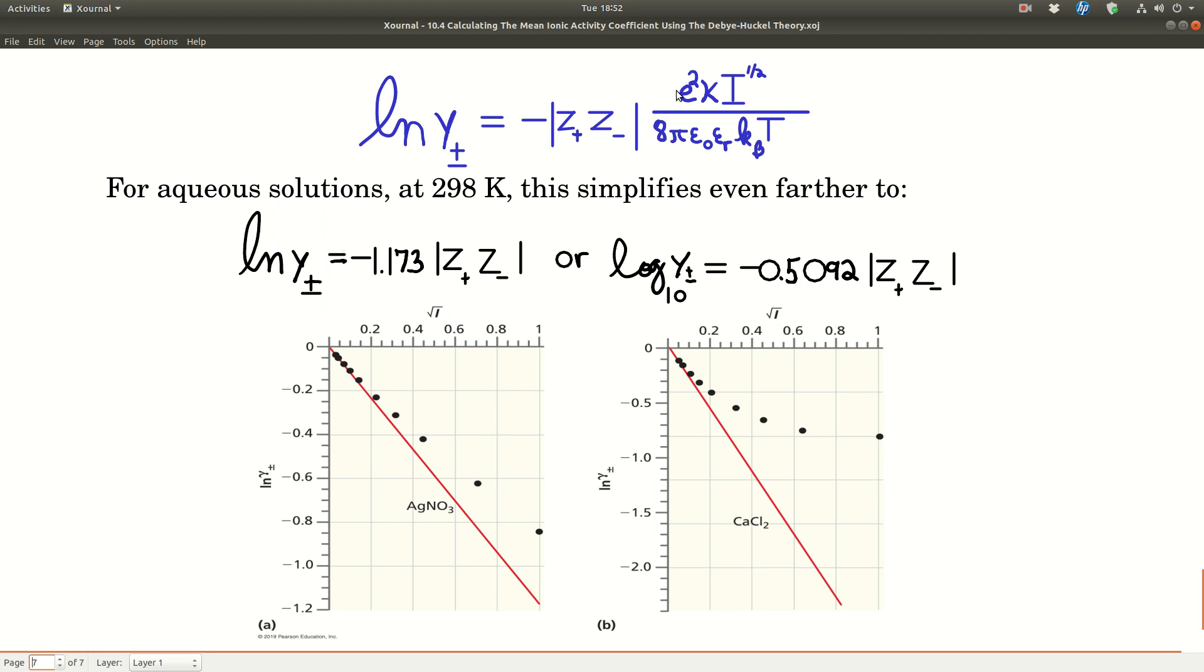The natural log of the mean ionic activity coefficient is equal to minus the absolute value of the product of the charges times e squared kappa times the square root of ionic strength over 8π epsilon naught epsilon r kB T. A lot of constants in there. For an aqueous solution at 298 Kelvin, it simplifies to natural log equals negative 1.173 times the absolute value of the product of the charges times square root of I. Or if it's log base 10, it's this number.